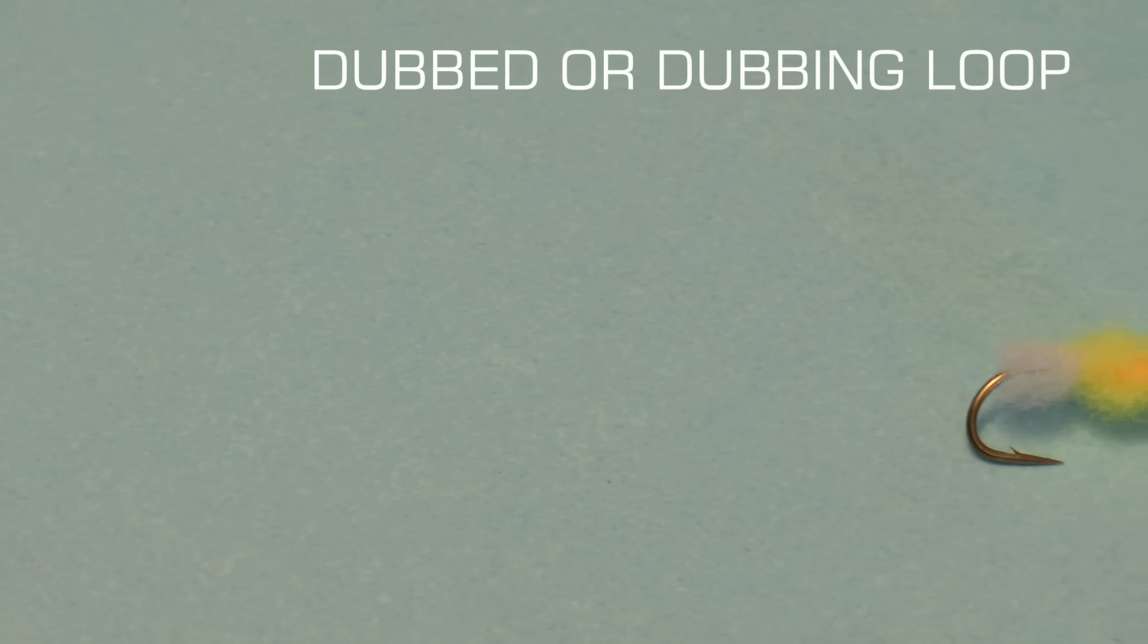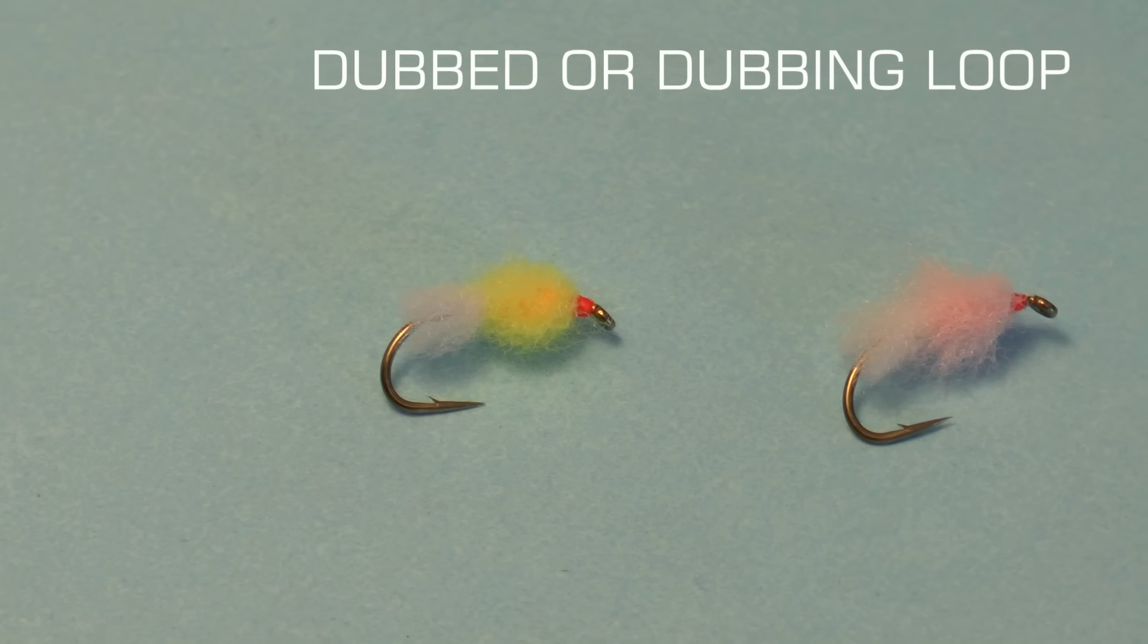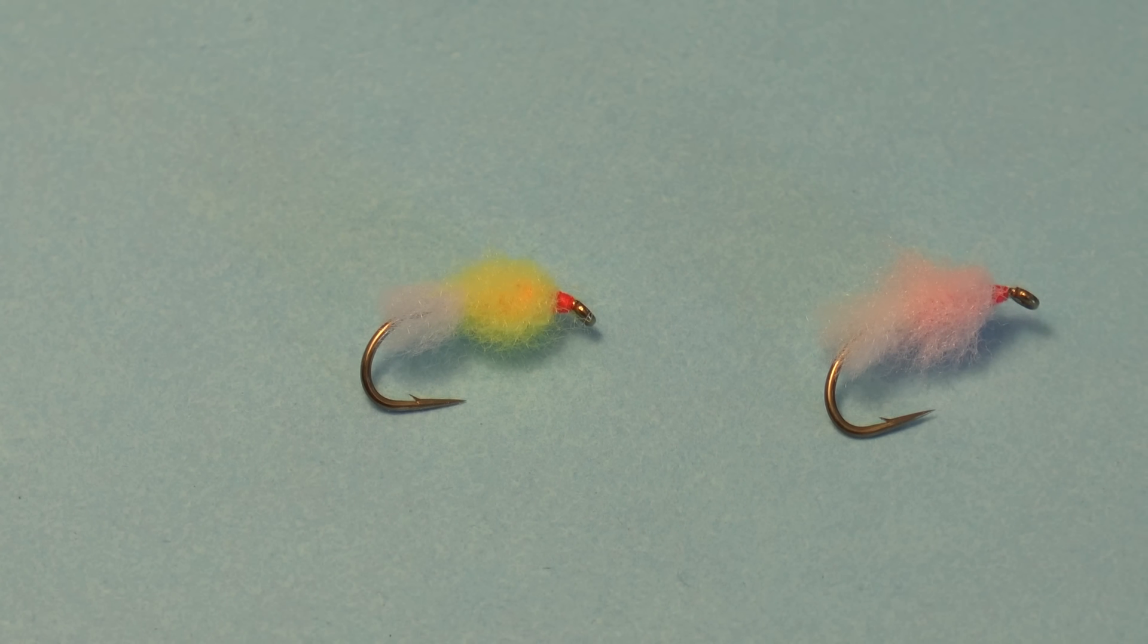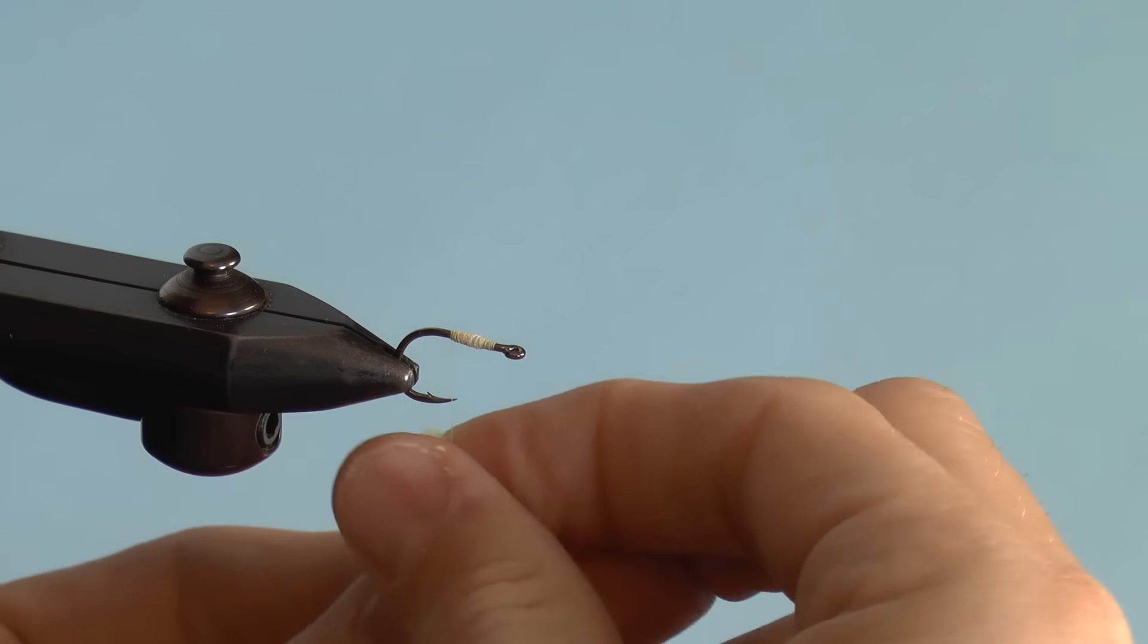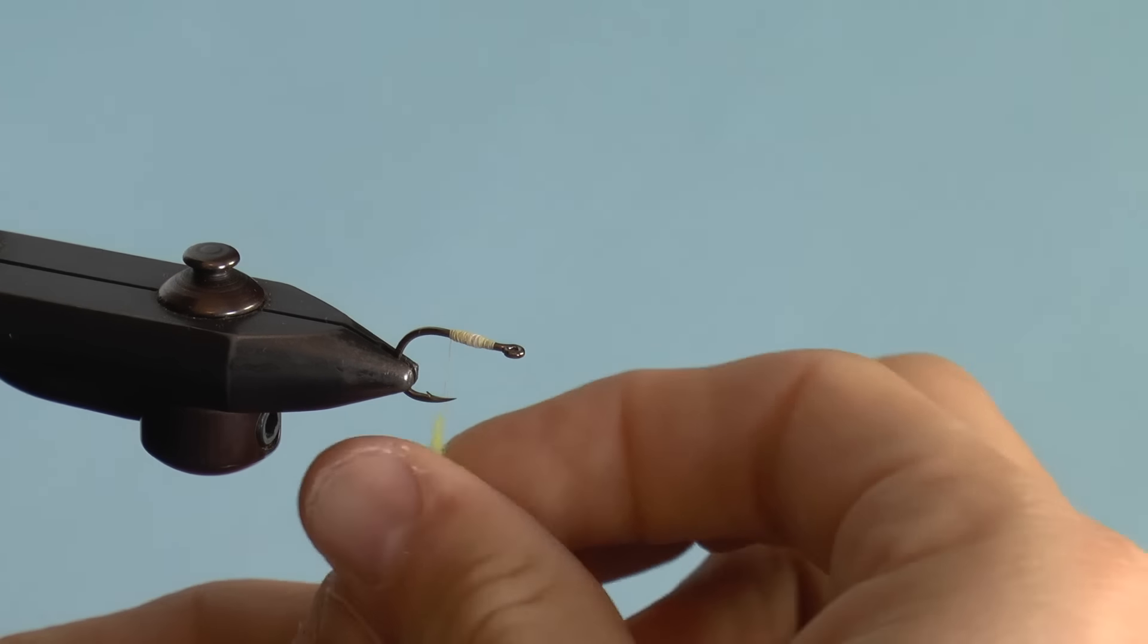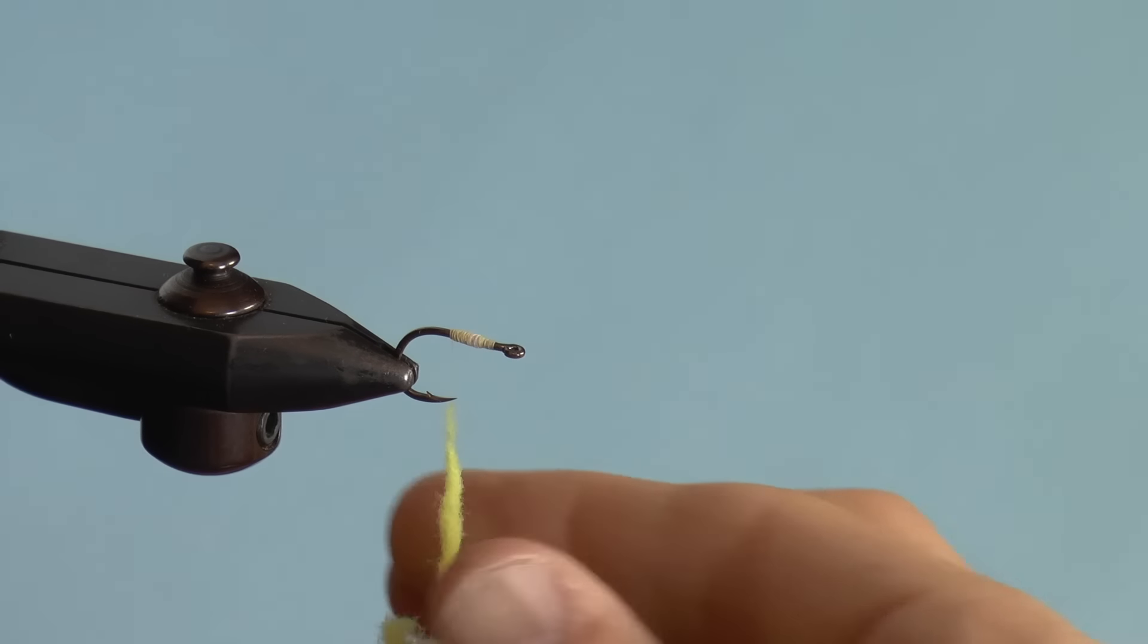Number four is a dubbed egg with straight dubbing or spun in a dubbing loop. Simply wrap the dubbing into a ball, apply more dubbing if necessary, and tie off. That's it. You're done with this fly.